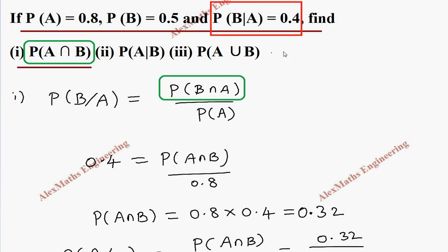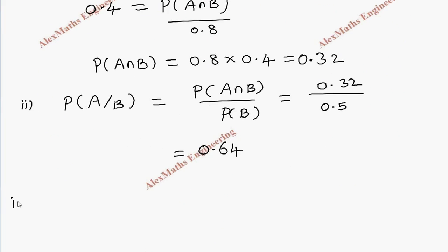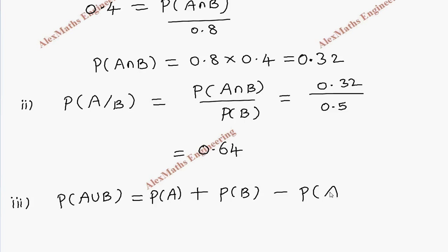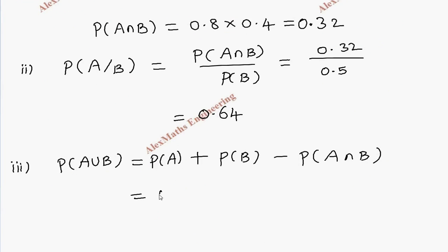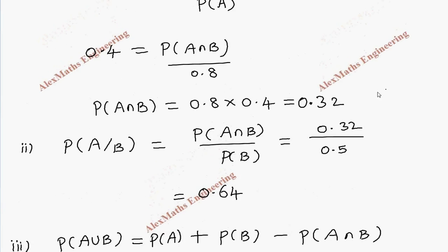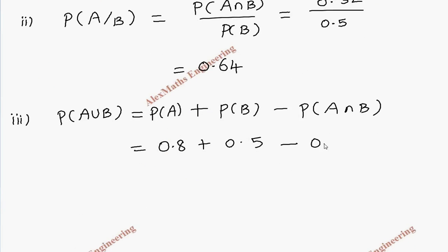In the third subdivision, they want P(A∪B). Using the formula P(A∪B) = P(A) + P(B) − P(A∩B), we substitute P(A) = 0.8, P(B) = 0.5, and P(A∩B) = 0.32. After simplification, we get 0.98.